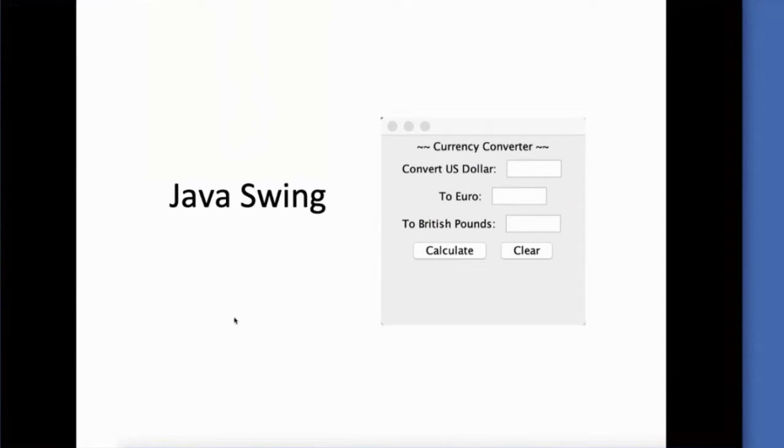One of the best examples I can give you is that DMACC has a system called Banner. And Banner helps control all the adding of classes, student information, faculty, staff, employee information, grades, all that kind of stuff. It's a big component.